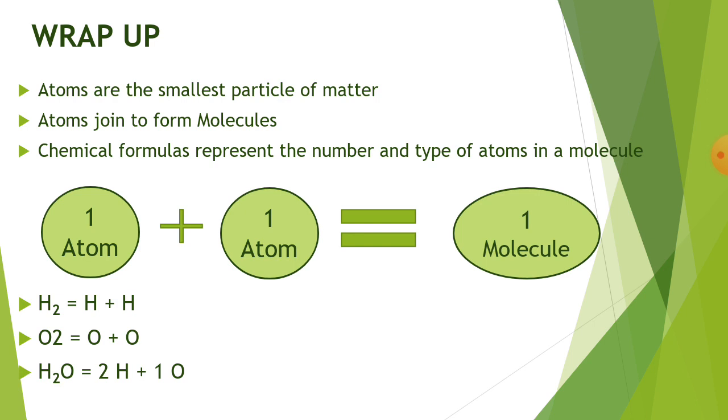For example, H2. It is formed by H plus H, means two hydrogen atoms. In the same way, O2. It is formed by two oxygen atoms. H2O. It is formed by two hydrogen and one oxygen atom. I hope it's clear. You all must be clear about it.